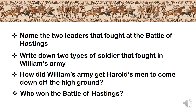Question three: how did William's army get Harold's men to come down off the high ground? They used a false retreat — they pretended to run away and got Harold's army to chase them down off the hill, which broke their shield wall and made it much easier for William to defeat the army. And finally number four: who won the Battle of Hastings? It was William of Normandy.